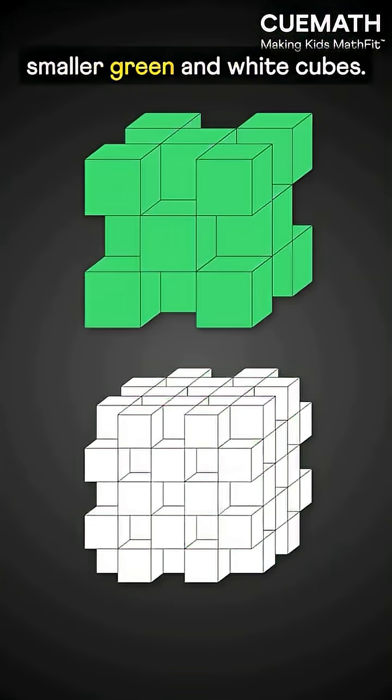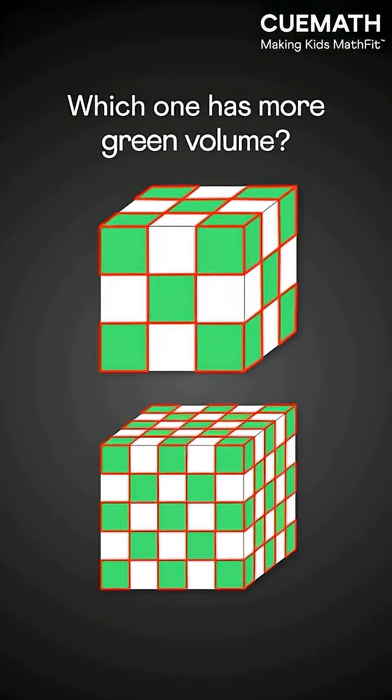Two cubes of the same size are made from smaller green and white cubes. Which one has more green volume?